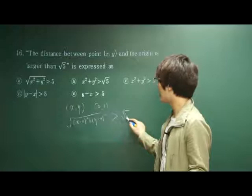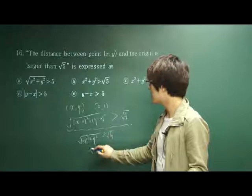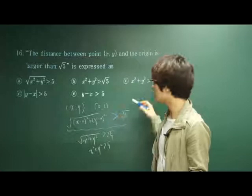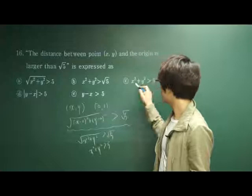So here's our expression. Square root of x squared plus y squared got to be greater than square root of 5. In other words, x squared plus y squared is greater than 5. So among our answer choices, which satisfy this is, what is it? It is c.